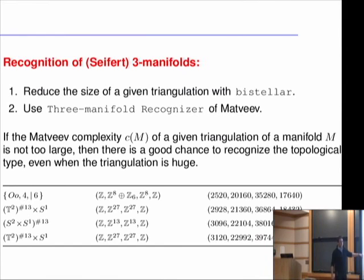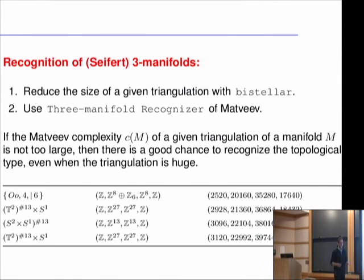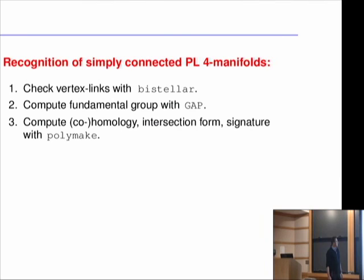This is Seifert's notation for Seifert manifolds: the resulting 3-manifold is orientable, the base space is orientable, and this notation encodes the number of exceptional fibers and how you glue the pieces together — a description of a Seifert manifold.